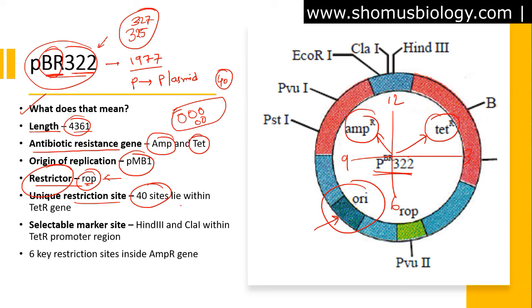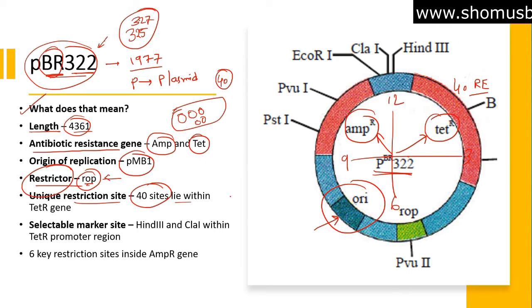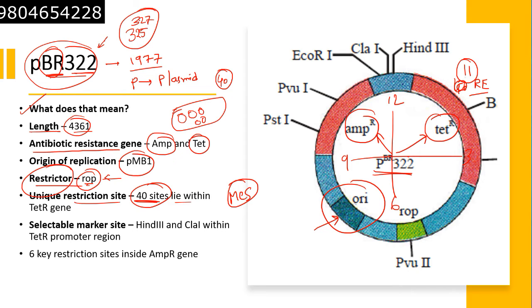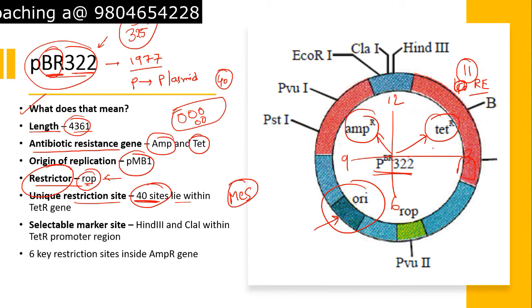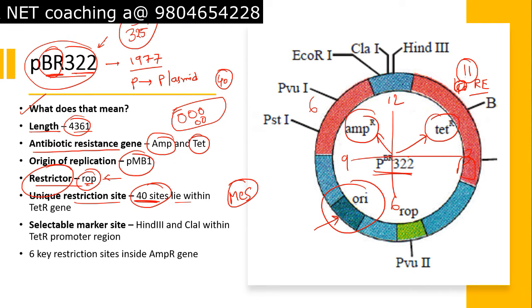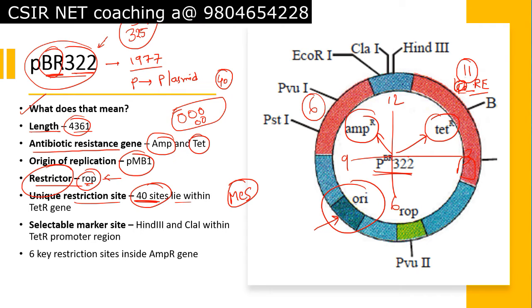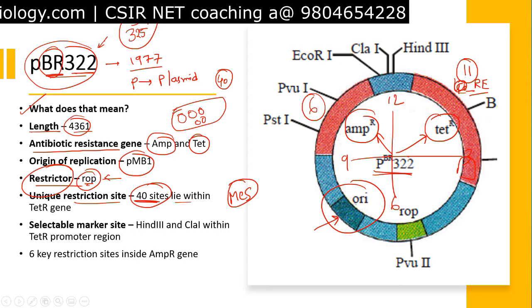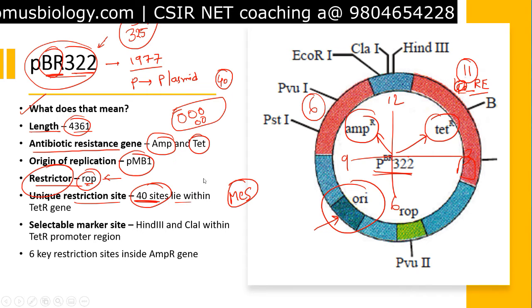PBR322 has 40 unique restriction sites, also known as a multiple cloning site (MCS). Out of the 40 restriction endonuclease sites, 11 sites are present within the promoter of the tetracycline resistance gene, and 6 key restriction sites are present inside the ampicillin resistance gene.